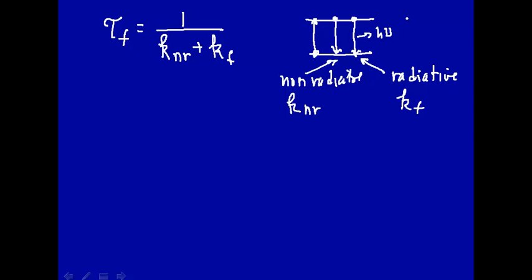Note here we've ignored phosphorescence or anything else, so we just have these two general processes. Now let's talk about another lifetime — the radiative lifetime — which we define as one over the rate constant for fluorescence decay, kf.